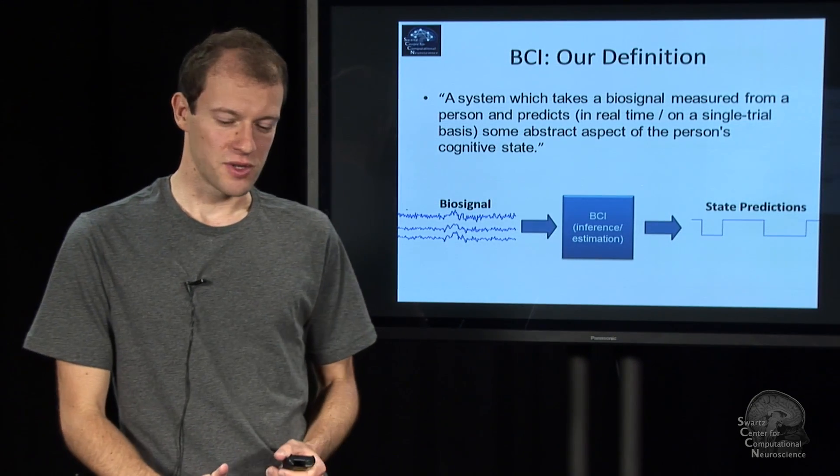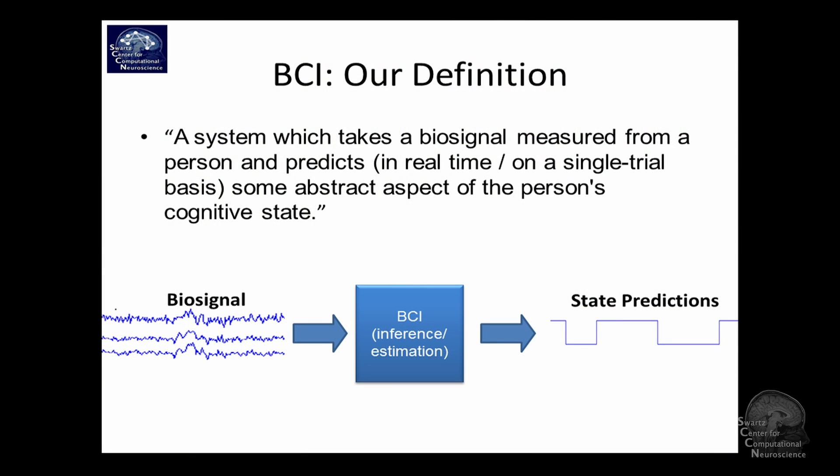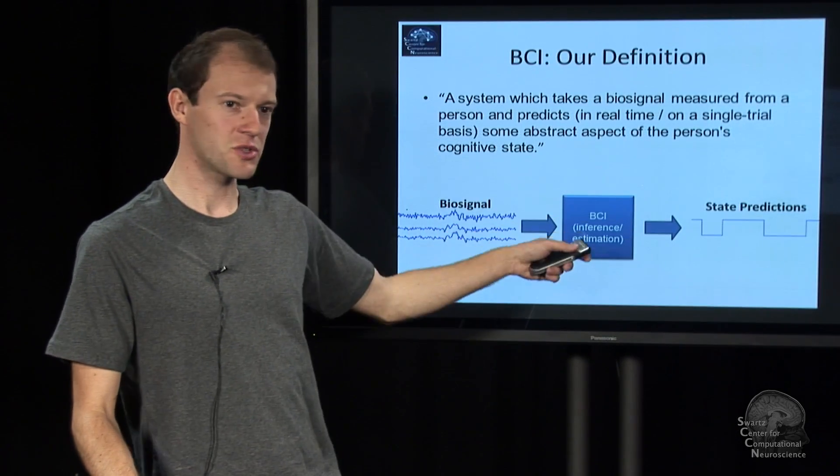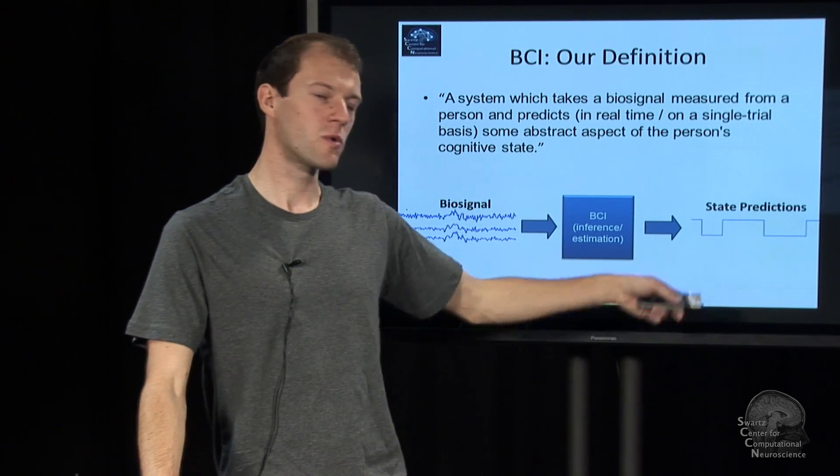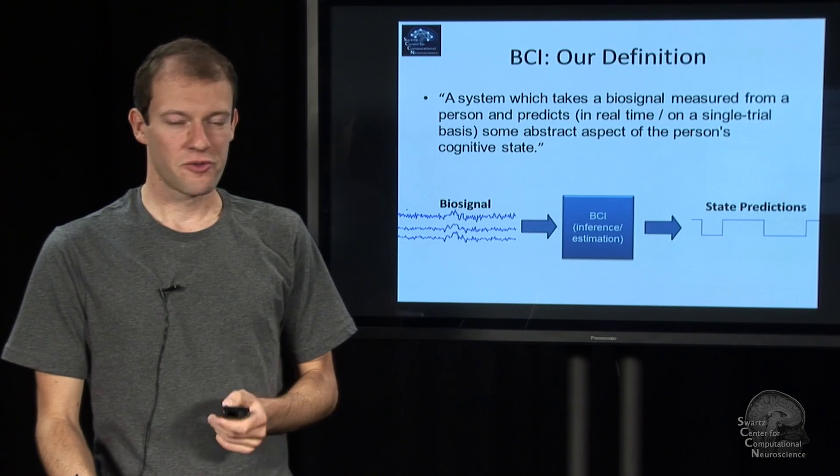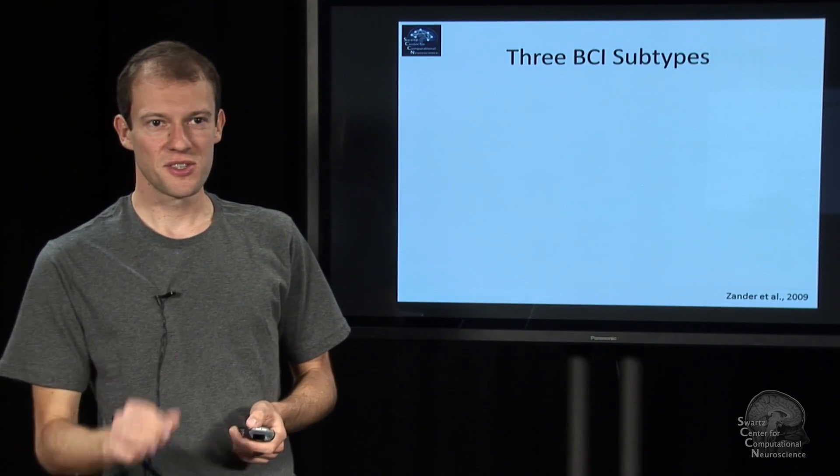So that is a rather general definition. And it basically allows you to build, to call any system which among others takes brain signals and so on and predicts cognitive state, call that a BCI. So biosignals in, here comes a BCI, and here is a state prediction. And we will break this also down and talk about what kinds of signals you can work with and what kinds of state you can estimate. But first, we will go through a few more detailed definitions.